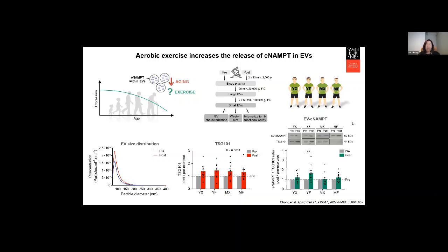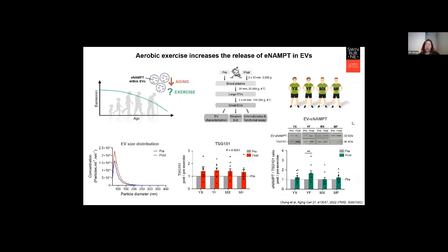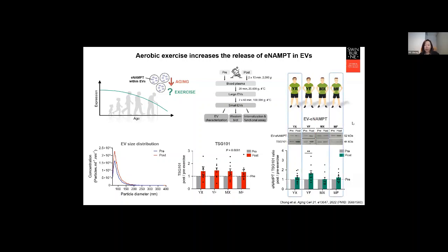We then measured the amount of NAMPT in both pre- and post-exercise EVs. What we found is that the young fit participants were the only group that had a significant increase in NAMPT after exercise. In contrast, the mature unfit group showed no changes after exercise. But interestingly, the mature fit group showed a similar increase in EV E-NAMPT release to the young unfit group. This suggests that greater aerobic fitness, possibly resulting from regular exercise, may overcome some of the age-related decline in NAMPT release.